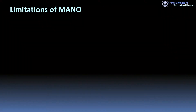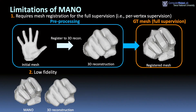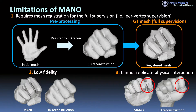There are three limitations of MANO. First, it requires mesh registration for the full supervision, which means per-vertex supervision. Second, its fidelity is low. Third, it cannot replicate physical interaction between hand parts.